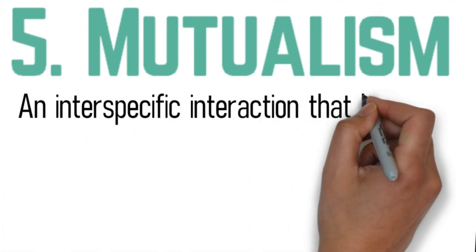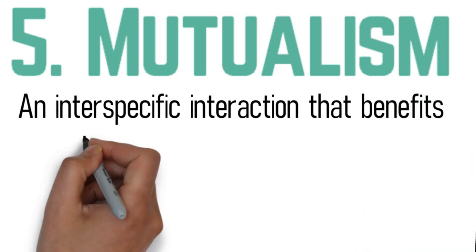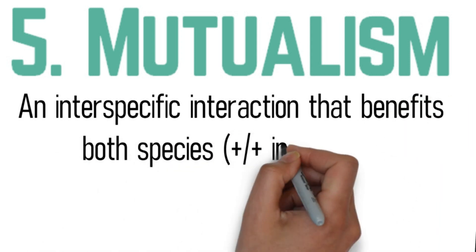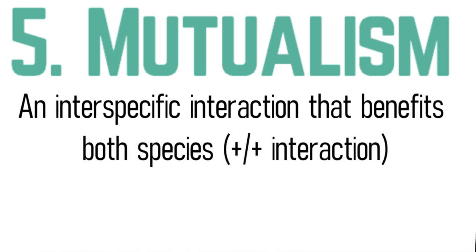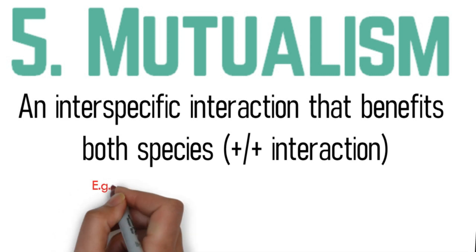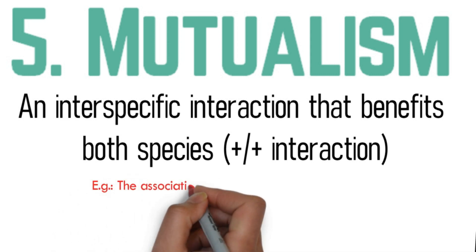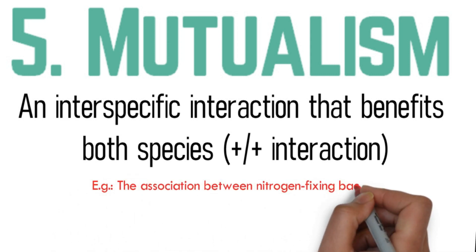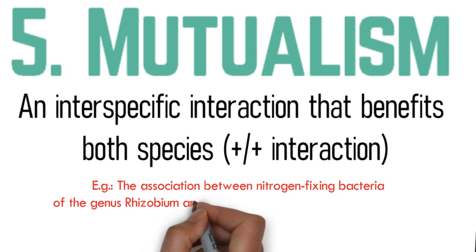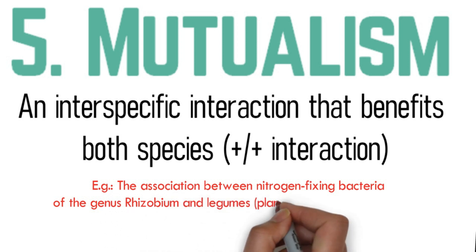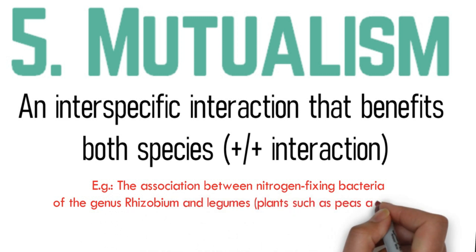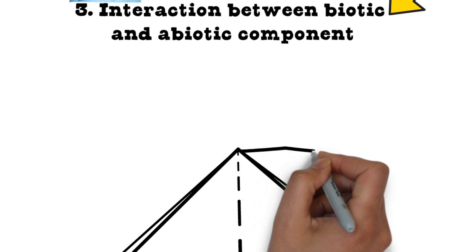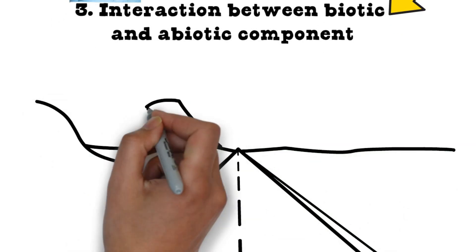Last but not least is mutualism. Mutualism can be defined as an interspecific interaction that benefits both species. An example of mutualism is the association between nitrogen-fixing bacteria of Rhizobium and legumes such as plants like peas and beans.